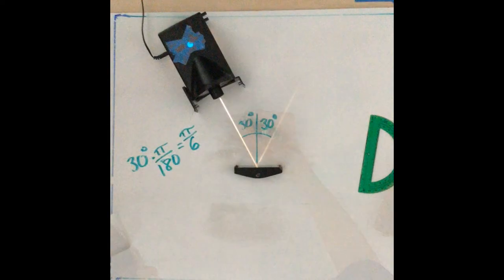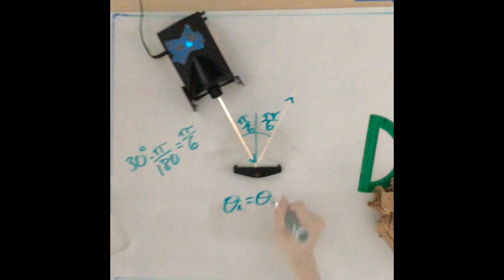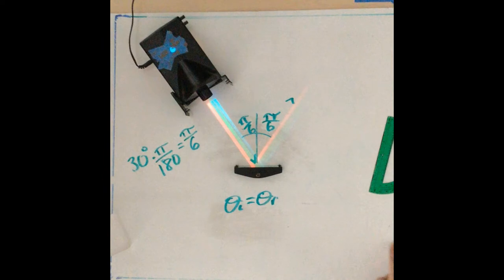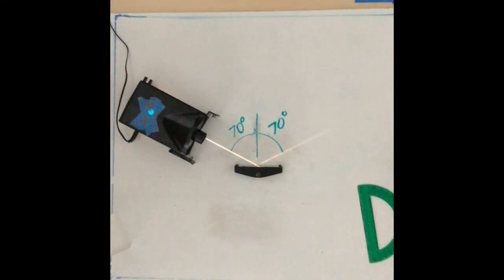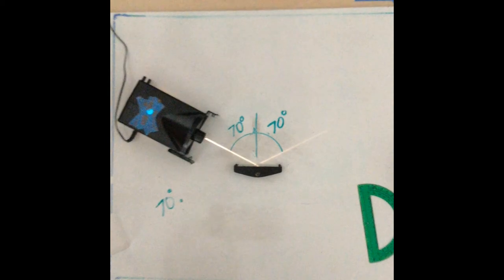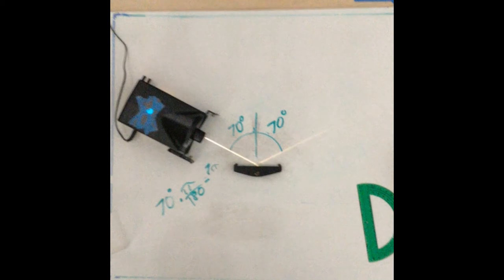When the incident angle is changed to 30 degrees from the normal, the reflected angle is also 30 degrees from the normal, or pi over six radians. The same rule applies when the incident ray is angled 70 degrees from the normal—the reflected ray is also measured to be 70 degrees, or 7 pi over 18 radians.